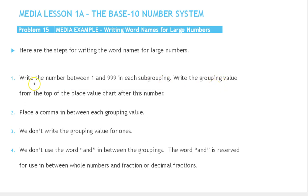We're going to write the number between 1 and 999 in each subgrouping. That's the hundreds, tens, and ones place value in each subgrouping, whether it's ones, thousands, millions, etc.